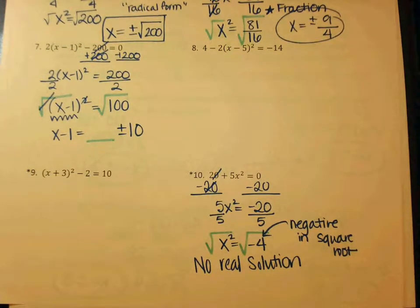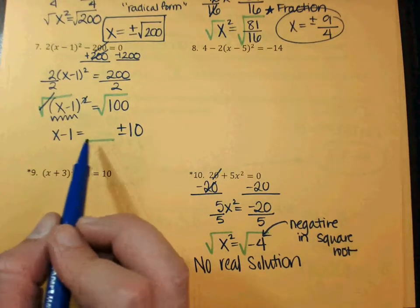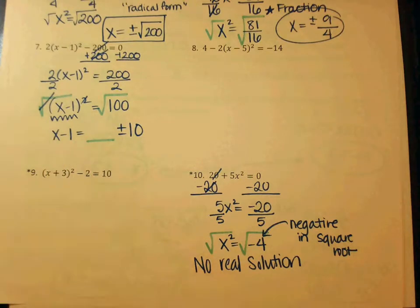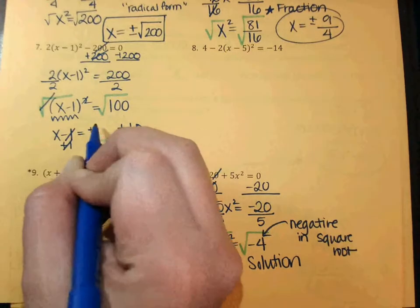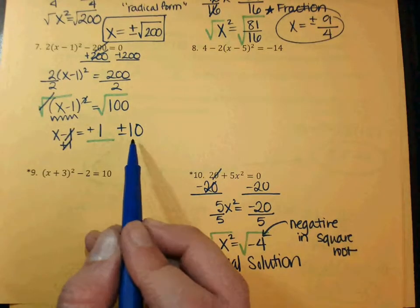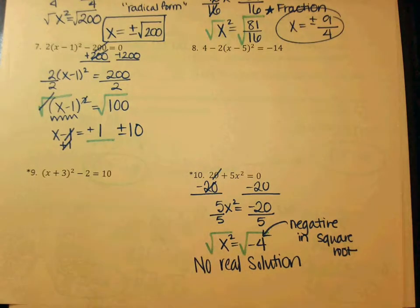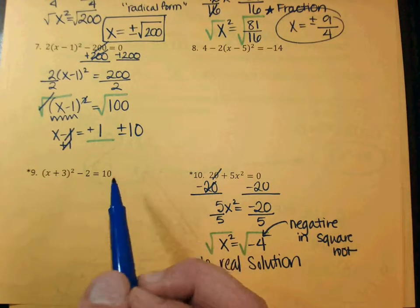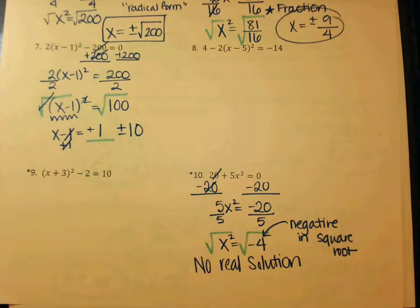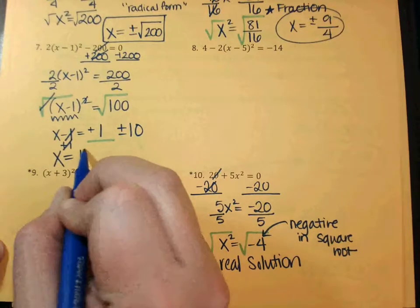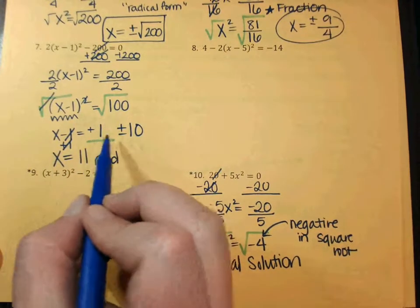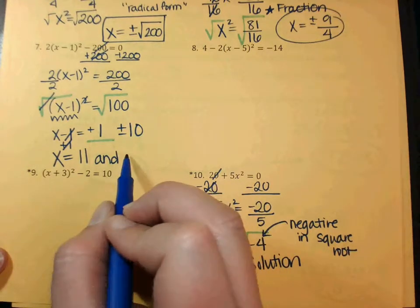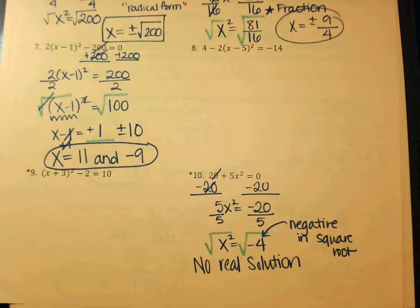So X minus 1 equals — leave a little space — plus or minus 10, because the square root of 100 is 10. You're saving a seat for this number to move over. If it's a minus 1, what will it be when you need to get rid of it? Plus 1 — cross out — plus 1. Now you can find your two numbers. What's 1 plus 10? 11. And you get a second number — what's 1 minus 10? Negative 9.